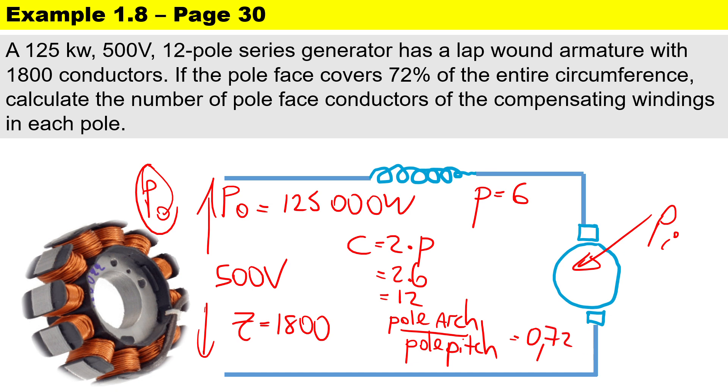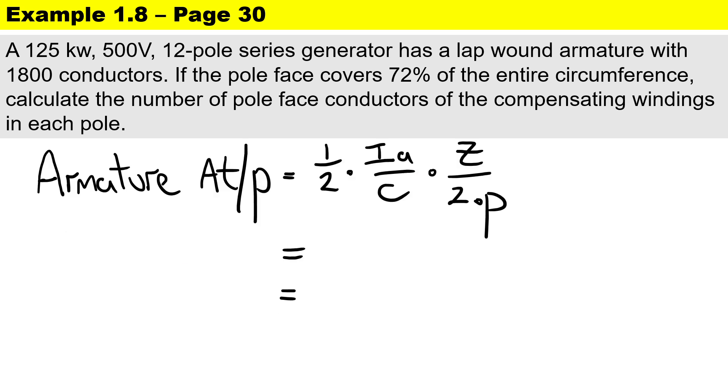To calculate the armature ampere turns per pole: it's one half times I_a over c times z over 2p. To calculate I_a, remember that I_a equals I_L. For generators we use the output power, so it's power out over voltage: 125,000 watts divided by 500 volts. Therefore the supply current is 250 amperes, which is also the armature current. Substituting: one half times 250 over 12 times 1800 over 2 times 6.